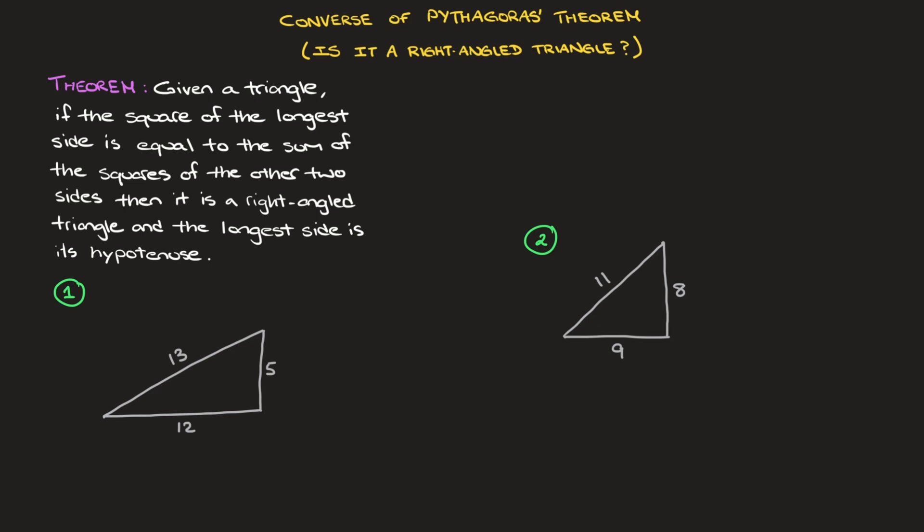In this video we learn about the converse of Pythagoras theorem, and as we're about to see, this theorem will allow us to answer questions like: is it a right-angled triangle? In other words, we're going to use this theorem as soon as we need to check whether or not a given triangle is a right-angled triangle.